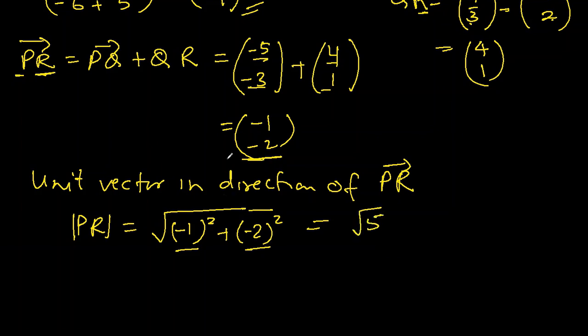So divide the vector by its own magnitude and we get the unit vector in direction of that vector. If you want to leave it like this you can, or you can write this as -1 over √5, -2 over √5. Both are right answers.